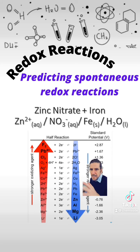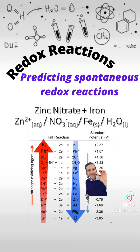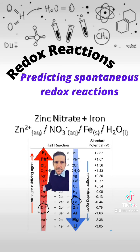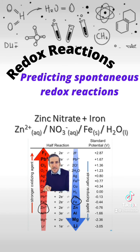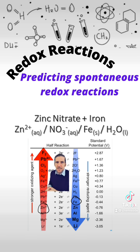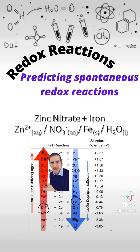The last example: we've got zinc nitrate and we're adding in pure iron. In this case, you can see that the zinc ions are below our pure iron on the electrochemical series. Therefore, we will not see a reaction occurring here because our zinc ions are not strong enough to make this reaction happen.